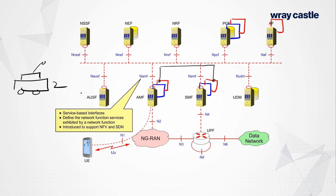You might need a network slice to update engine management software, record driver statistics, and provide advanced driver assistance — for example, taking over steering if the driver falls asleep or avoiding a collision. All of these connect to a single UE, because the vehicle as a whole is considered the UE. To support all those individual services effectively, you would connect that single mobile entity to multiple network slices simultaneously. Each slice would likely have a different IP address, since the address for watching Netflix is not the same as the one for the vehicle manufacturer to access engine management systems.